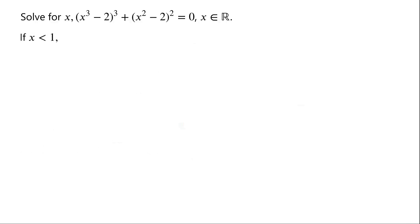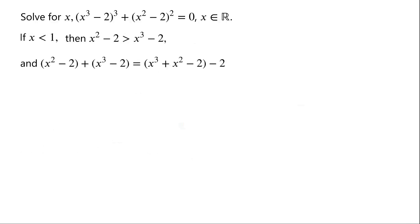When x is less than 1, then x squared minus 2 is greater than x cubed minus 2. And x squared minus 2 plus x cubed minus 2 can be written as x cubed plus x squared minus 2 minus 2. x cubed plus x squared minus 2 can be written as x minus 1, times x squared plus 2x plus 2.